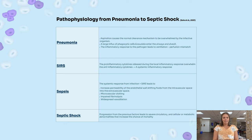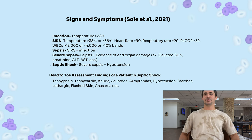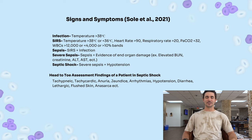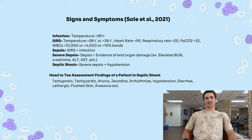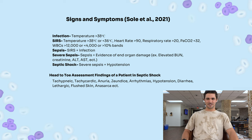All of these factors in sepsis progress further, leading to severe circulatory and cellular or metabolic abnormalities that increase the chance of mortality. Signs and symptoms — septic shock. We have temperature over 38 degrees for infection. For SIRS criteria, you're looking at temperature over 38°C or less than 36°C, heart rate over 90, respiratory rate over 20, PaCO2 less than 32, and white blood cells greater than 12,000 or less than 4,000, or greater than 10% bands. Sepsis is SIRS criteria plus infection. Moving on to severe sepsis, you have evidence of end organ damage.